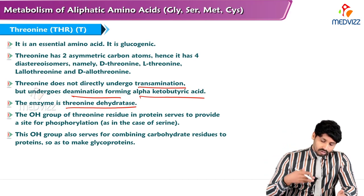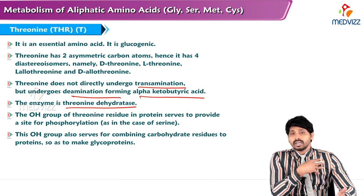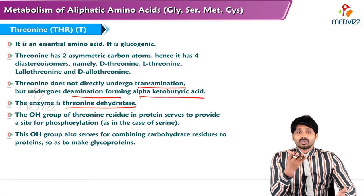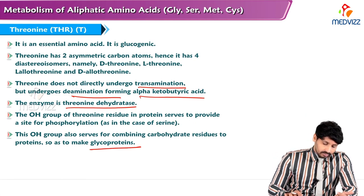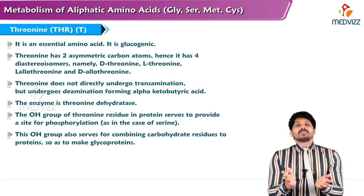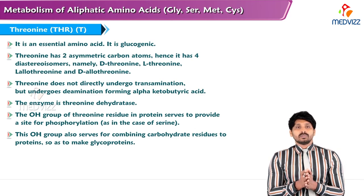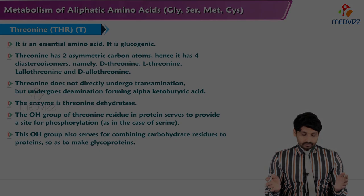The hydroxyl group of threonine residues in proteins serves as a site for phosphorylation, similar to serine. This hydroxyl group also serves for combining carbohydrates to proteins in making glycoproteins. That's all about the metabolism of hydroxyl group-containing amino acids along with alanine. Thanks for watching.